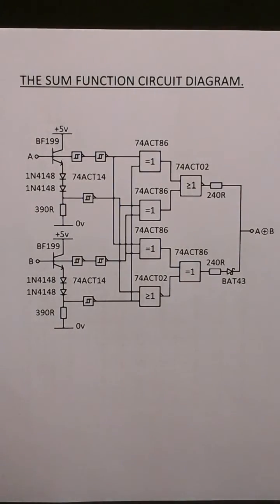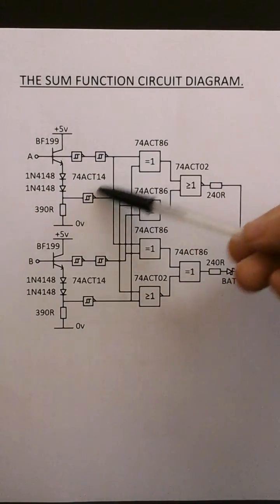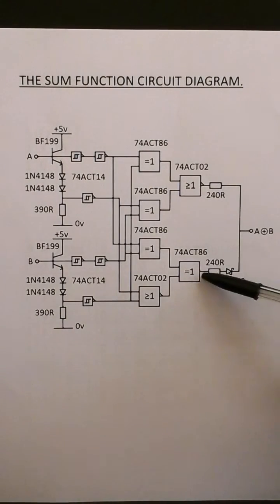So this is the circuit diagram for the sum function. We have the exclusive or gates here and the exclusive nor gates here. Here we have the Schmitt trigger inverters. And we're using this output resistor network, diode resistor network here, to give A exclusive or B. This diode means you can use the output coding that I've shown you in the beginning. It is quite complicated to build but it's just about doable on Veribode.